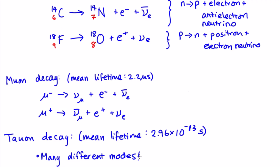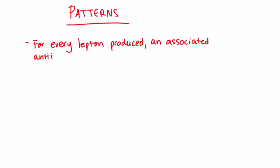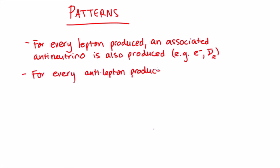So the pattern to these decay or reaction processes can be summarized like this. For every lepton that's produced, an associated antineutrino is produced. For every antilepton that's produced, an associated neutrino is produced.